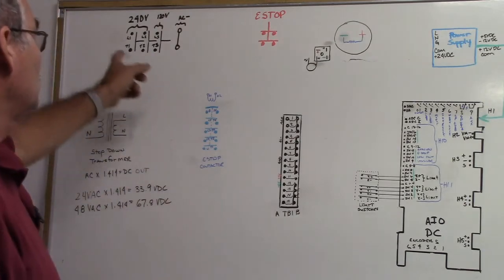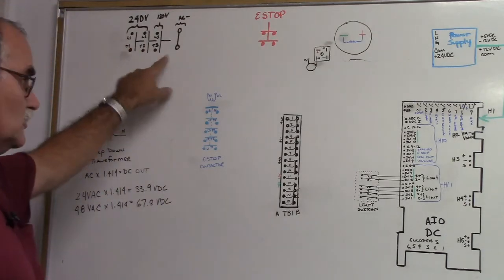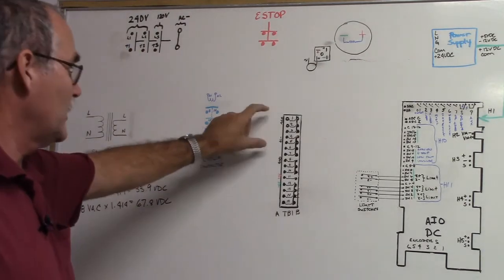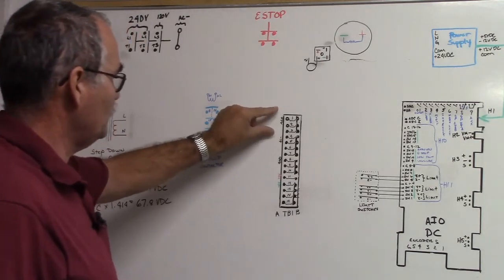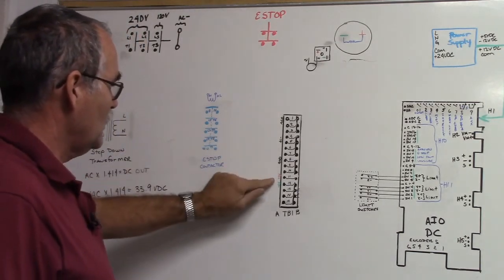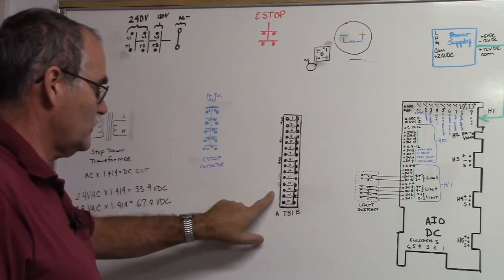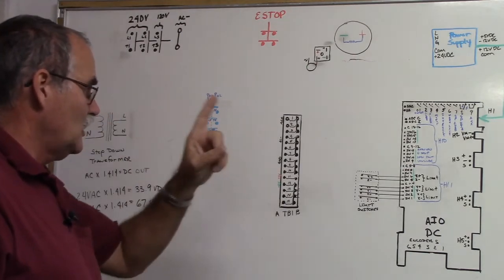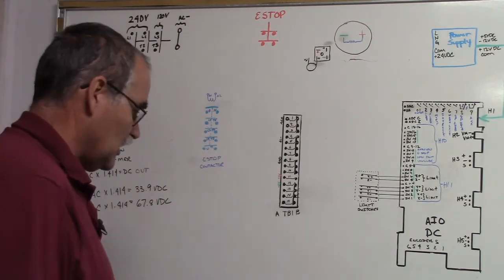Okay, let's get power from our disconnect switch to our terminal block. I've marked AC plus, AC minus, ground, 24 volts plus, minus 24 volts here. The other thing we need to talk about is grounding systems.